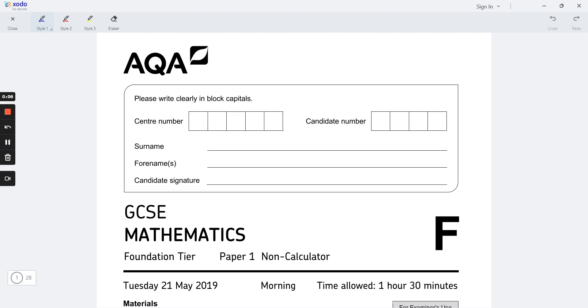Hello all, today we are going to solve a question paper from AQA GCSE Mathematics Foundation Tier Paper 1, non-calculator. Paper one is a non-calculator, so you are not allowed to use your calculator in this paper.